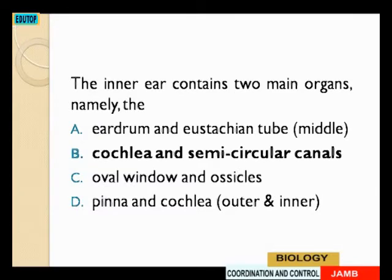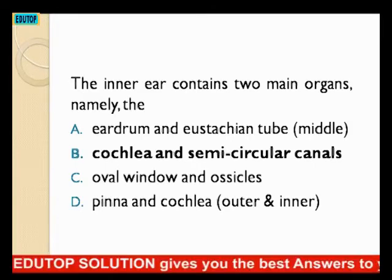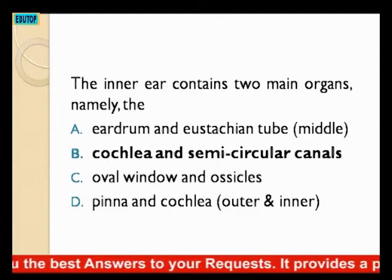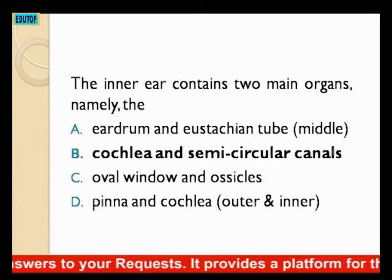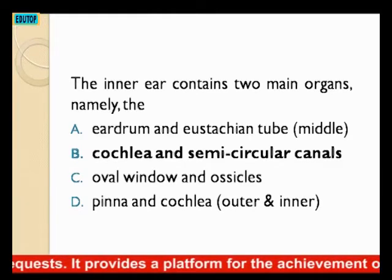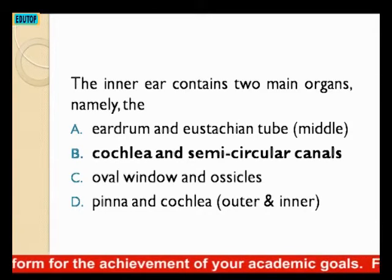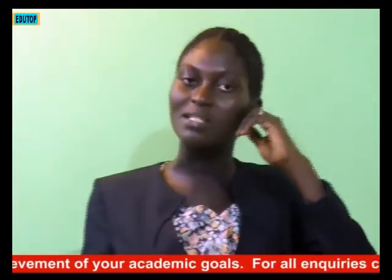The next question: the inner ear contains two main organs, namely A, eardrum and Eustachian tube; B, cochlea and semicircular canals; C, oval window and utricle; D, pinna and cochlea. The eardrum and Eustachian tube are in the middle ear. The oval window is in the inner ear, but the utricle is in the middle ear. The pinna is the outer ear you can see.